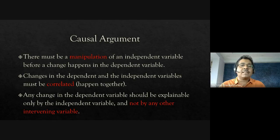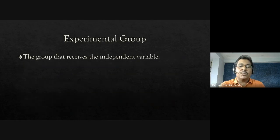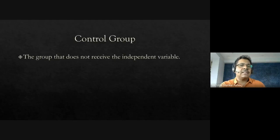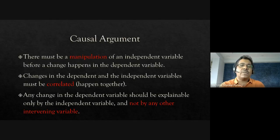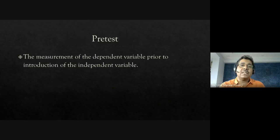The reason for having an experimental group and a control group is to be extremely sure that any change in the dependent variable — attitude, behavior, or habit — is explainable only by the independent variable and not by any other intervening variable. Since we have two very similar groups, we give treatment to one and not the other, which tells us whether the treatment has any effect.